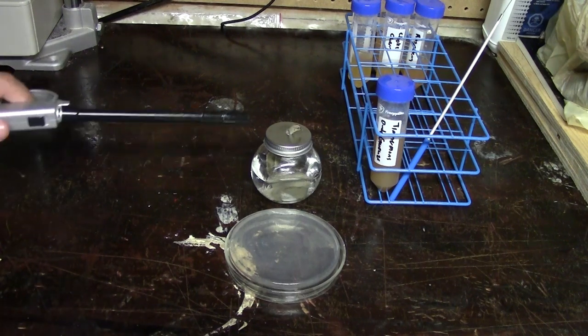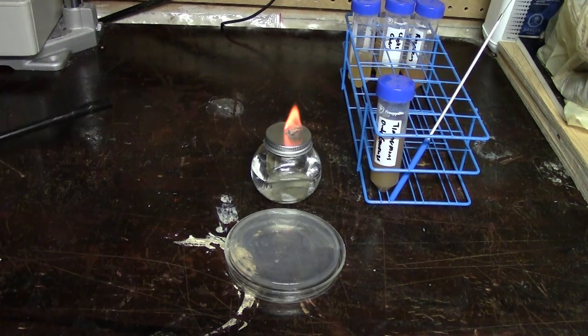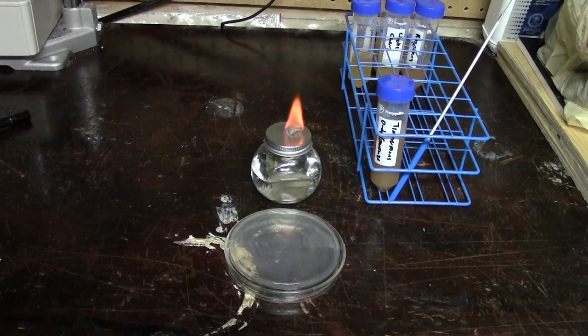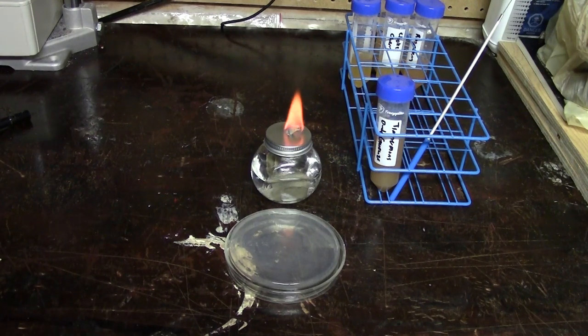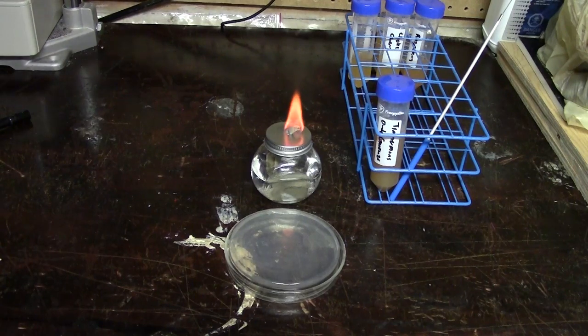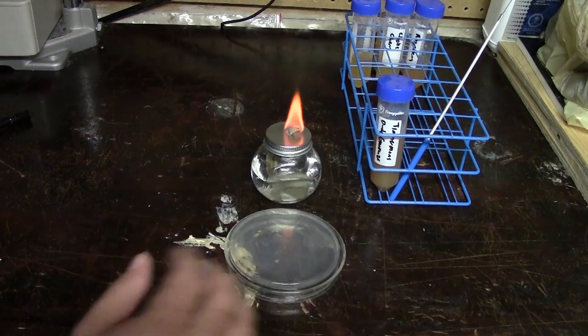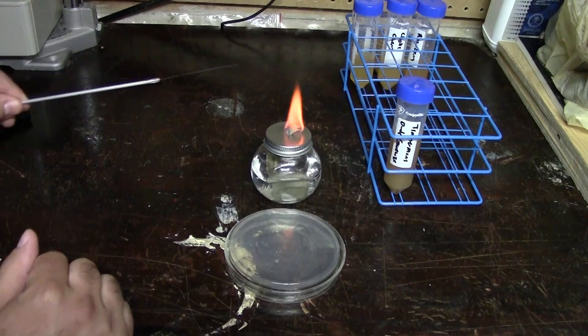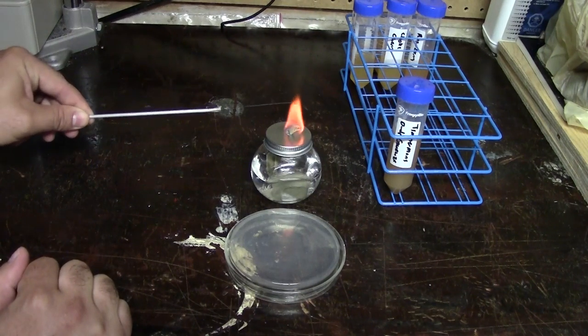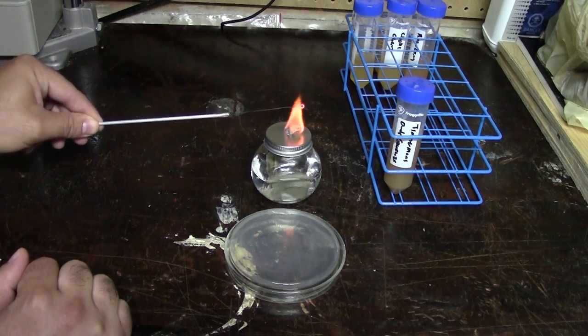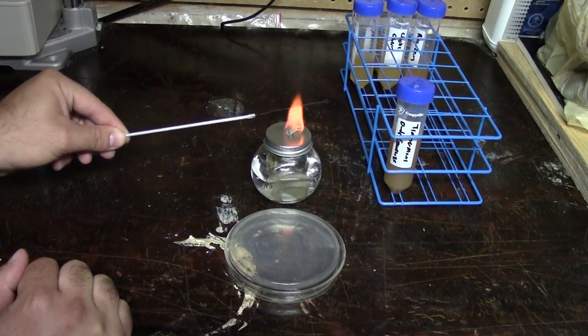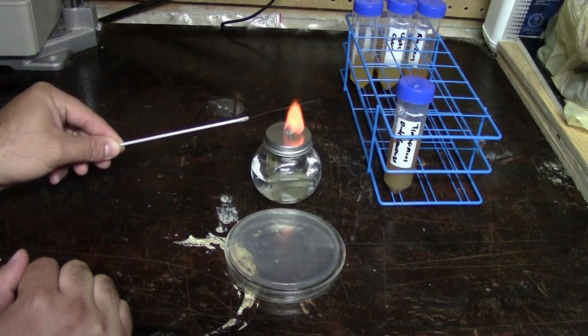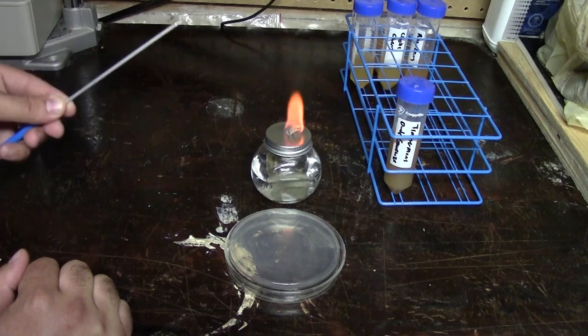So to start we want to of course light our alcohol lamp. This is going to create the area of sort of clean moving air that we can now work in, and of course also provides us with the ability to sanitize and sterilize our tools. So the next thing we need is to sanitize or sterilize our loop and you do that simply by heating it in the flame. As you can see it gets red hot. No organism on earth can survive that. So we now know that this is completely sterile.